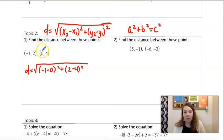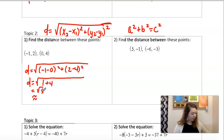So here we would have negative 1 squared is 1. Negative 2 squared is 4. So we have root 5. Root 5 is approximately 2.2 if we round to the nearest tenth.